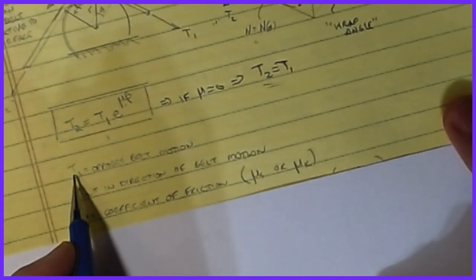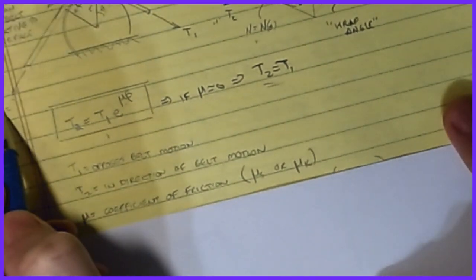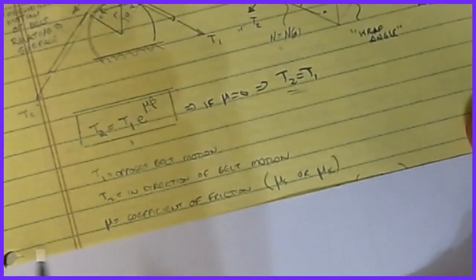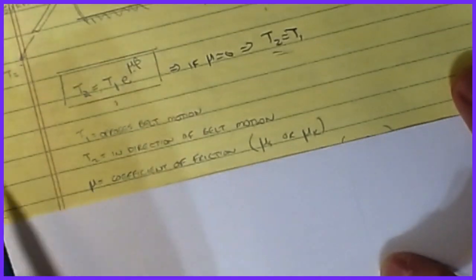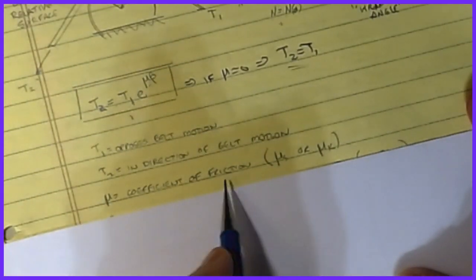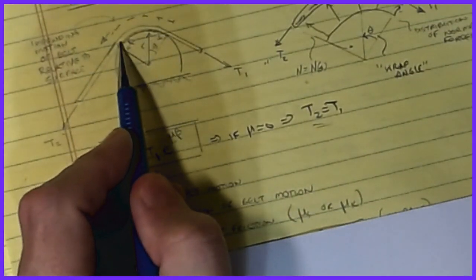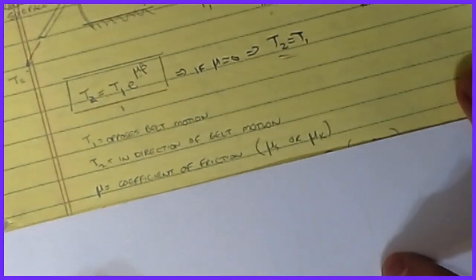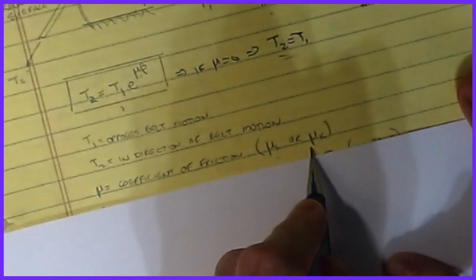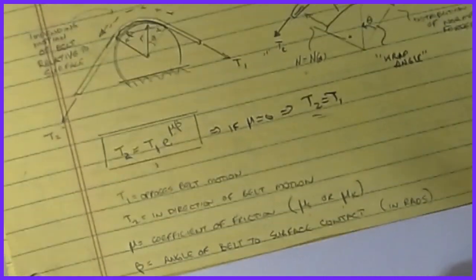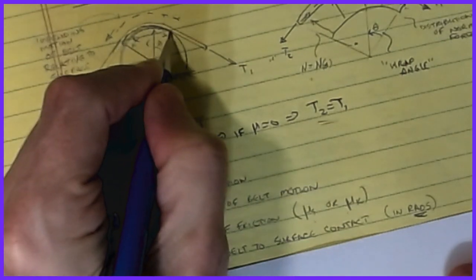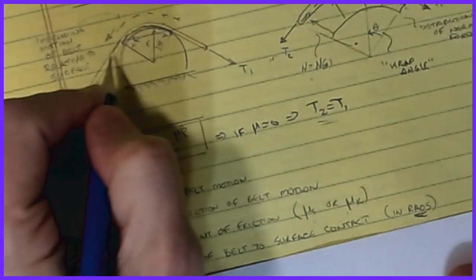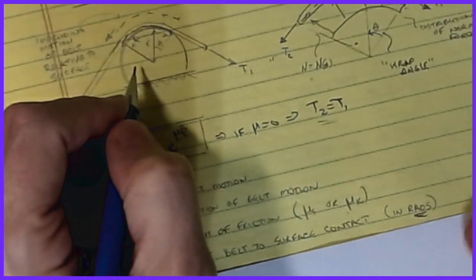Defining the terms: T1 opposes the direction of belt motion — it's on the back side fighting the pull. T2 is in the direction of belt motion, the larger driving tension. μ is the coefficient of friction between the belt and contact surface — use μ_s for static, μ_k for kinetic. β is the wrap angle measured in radians between the two tangent points where the belt enters and leaves contact.